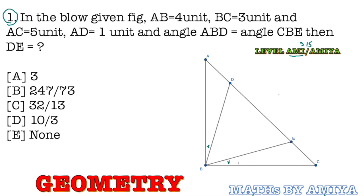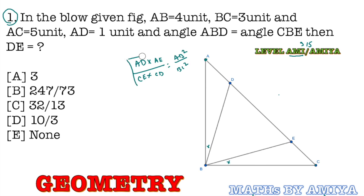Since this angle and this angle are the same, our property states that AD into AE upon CE into CD is nothing but AB² upon BC². We started from AD into AE upon CE into CD — since we started from A, this gives AB² and BC². This is termed the isogonal property of a triangle. Please make a note of this.